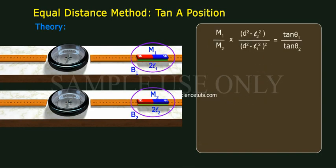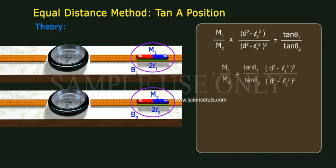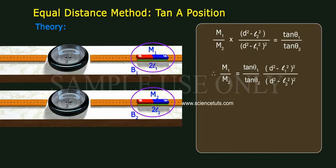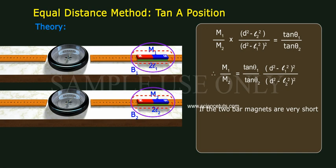Substituting the values of B1 and B2: M1/M2 × (d² − L2²)² / (d² − L1²)² = tan theta1 / tan theta2. Therefore, M1/M2 = (tan theta1 / tan theta2) × (d² − L1²)² / (d² − L2²)². If the two bar magnets are very short, then M1/M2 = tan theta1 / tan theta2.